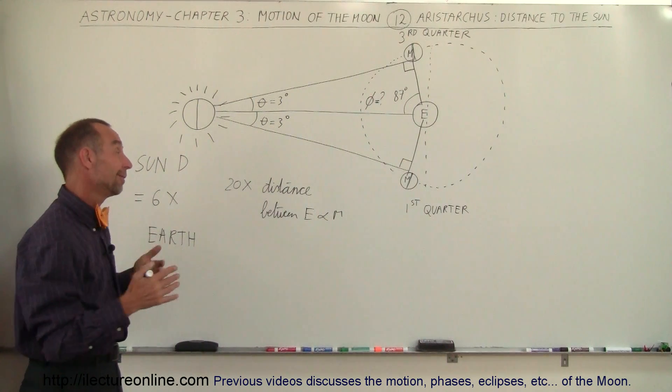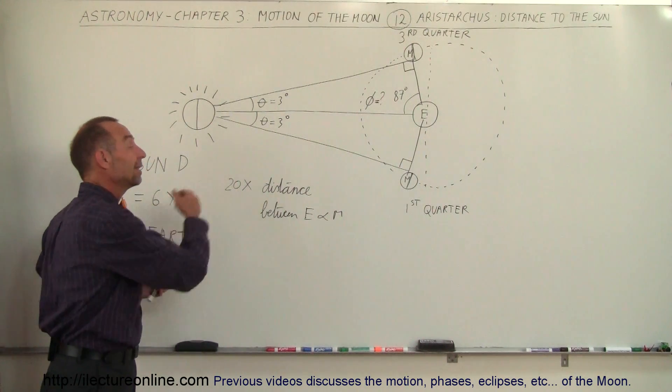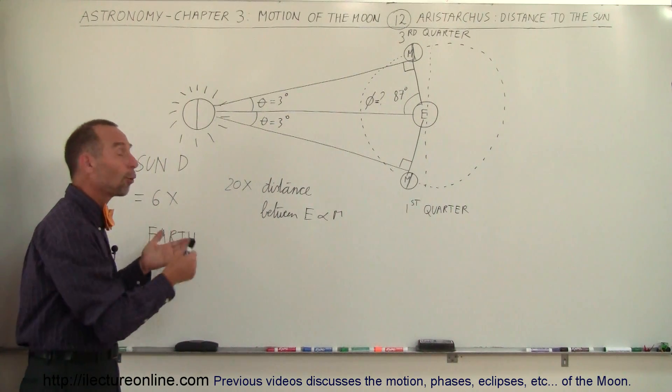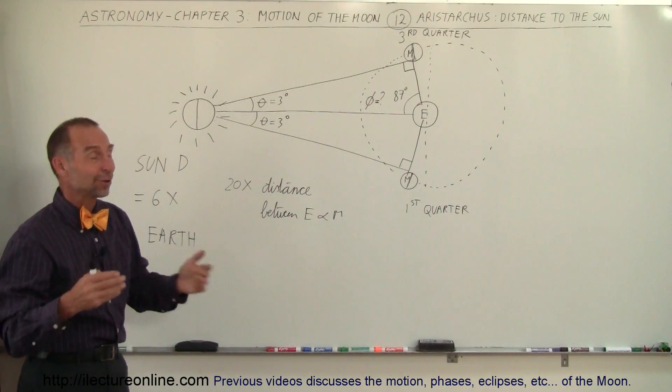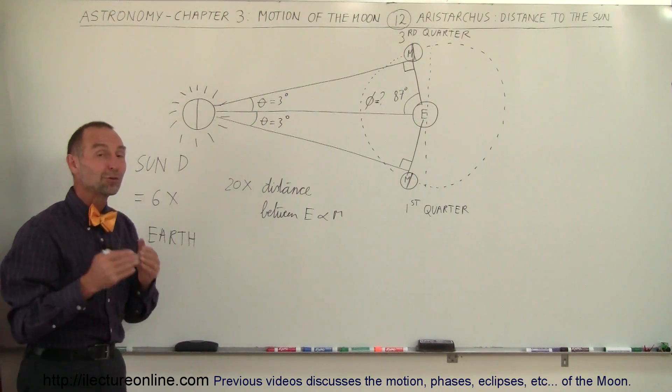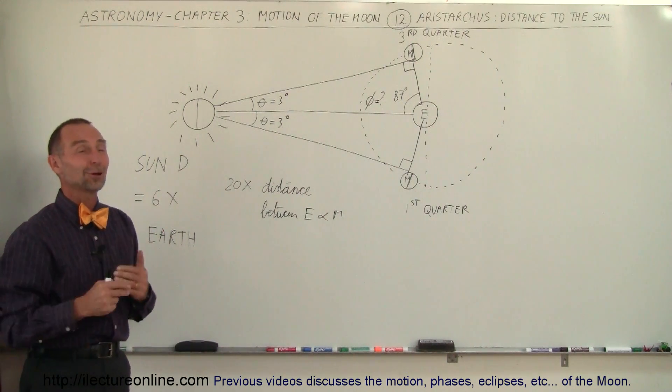Of course we know that to be true. Of course, he figured out 20 times, but the true distance is more like 400 times the distance between the earth and the moon. And the diameter of the sun we know is more than a hundred times the diameter of the earth.